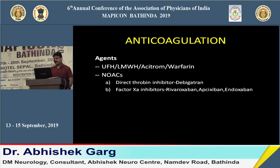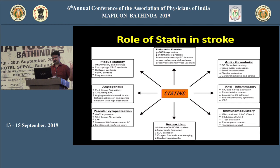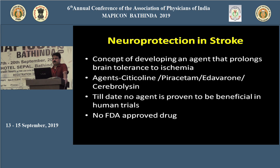Options for anticoagulation include unfractionated heparin, low molecular weight heparin, warfarin, and newer oral anticoagulants like dabigatran and rivaroxaban — the advantage of newer agents being no need for frequent INR monitoring. Neuroprotection: multiple agents are available in the market, such as citicoline and piracetam, but no agent is FDA-approved as neuroprotective.